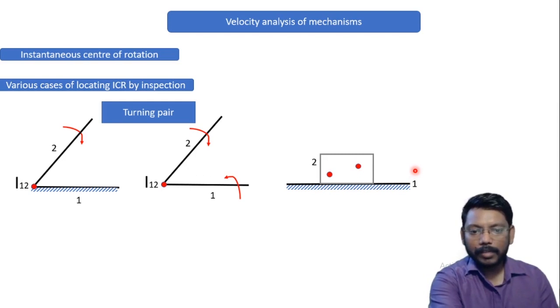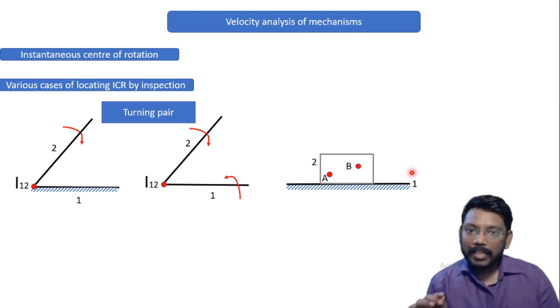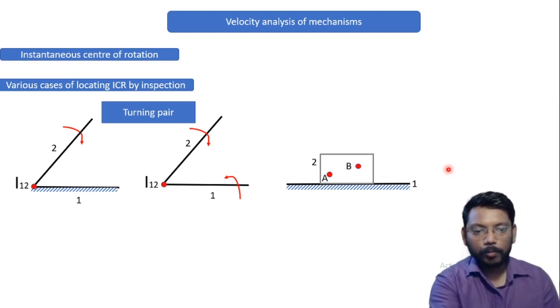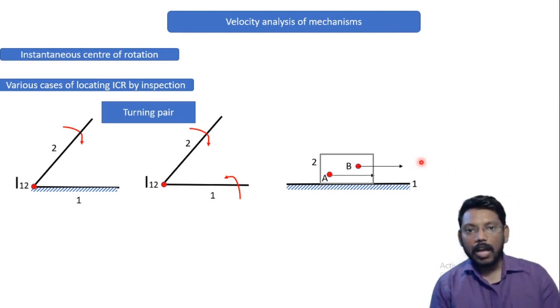Let us suppose point A and point B. Now can I say they are also going to move in the same right direction? Because box is going to move in the right direction.